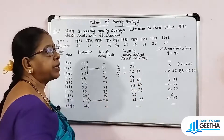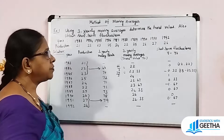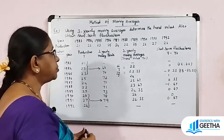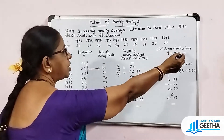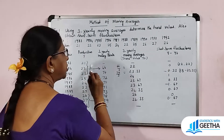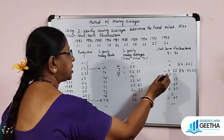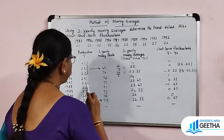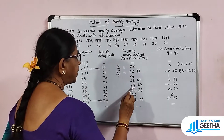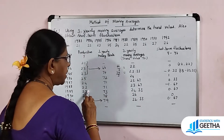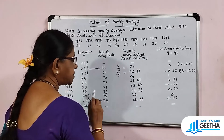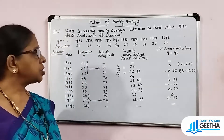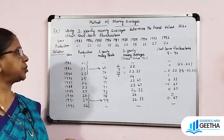Now we calculate short-term fluctuations as y minus Yt. The 1st year has no trend value. For the 2nd year: 22−22 = 0. Then 23−23.33 = −0.33. Then 25−24 = 1. Then 24−23.67 = 0.33. Then 22−23.67 = −1.67. Then 25−24.33 = 0.67. Then 26−26 = 0. Then 27−26.33 = 0.67. The last year also has no short-term fluctuation. This completes the 3-yearly moving averages method.